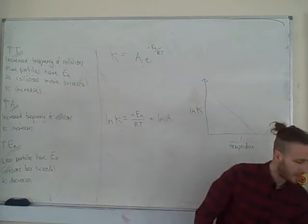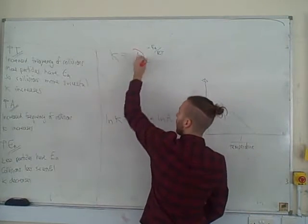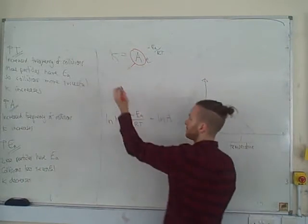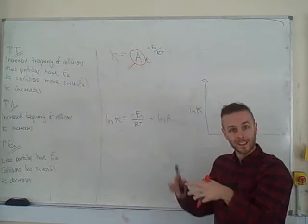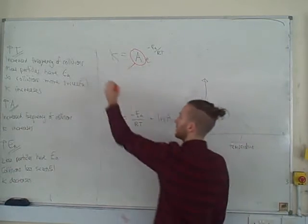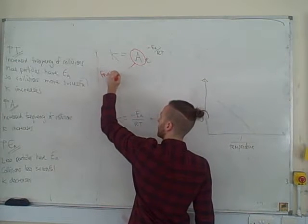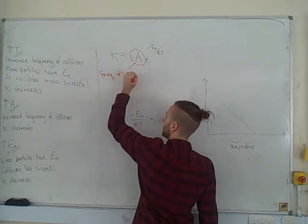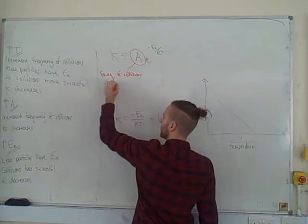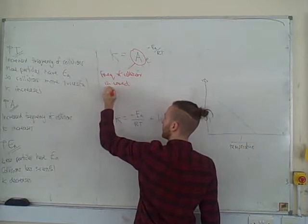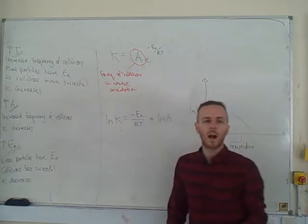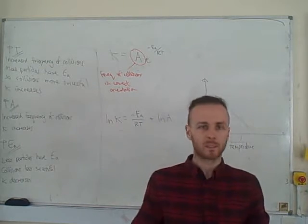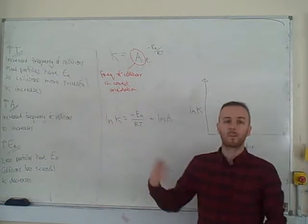This basically just talks to you about how frequent your collisions are. So it's the frequency of collisions in the correct orientation. How often things are colliding - collisions per second, or rate of collisions you could say.